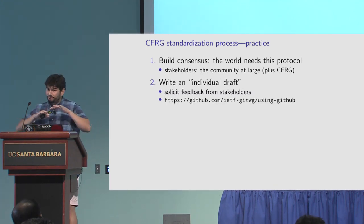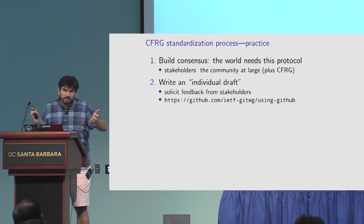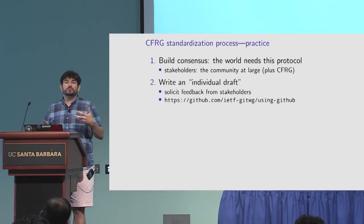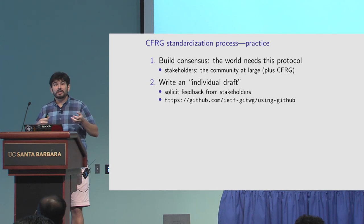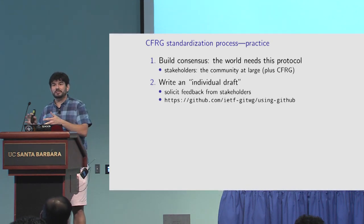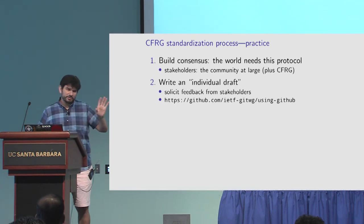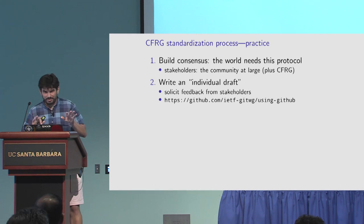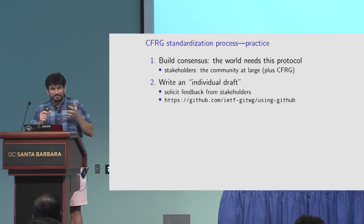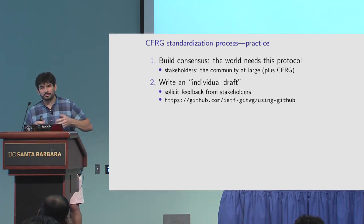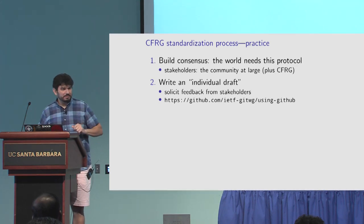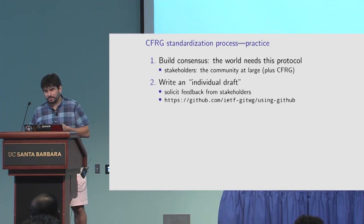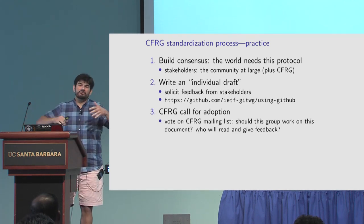Once you've got that idea, it's time to write an individual draft - the first draft of the standard. It doesn't have to be perfect; it can have to-dos spread all over the place. The idea is to give people a notion of what it will eventually look like so the CFRG and your identified users can give feedback. On the format: the official RFC format is a horrific XML thing you don't want to write by hand. Nowadays you can use Markdown and automatically transform things. There's a GitHub workflow I totally recommend because it's really nice to get feedback via issues and pull requests.